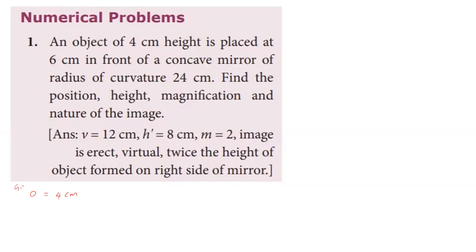Given data: object distance u is equal to minus six centimeter (in front of a concave mirror). Radius of curvature of the concave mirror is minus 24 centimeter. Using the focal length formula f equals R by 2: f equals minus 24 by 2, so focal length f equals minus 12 centimeter.